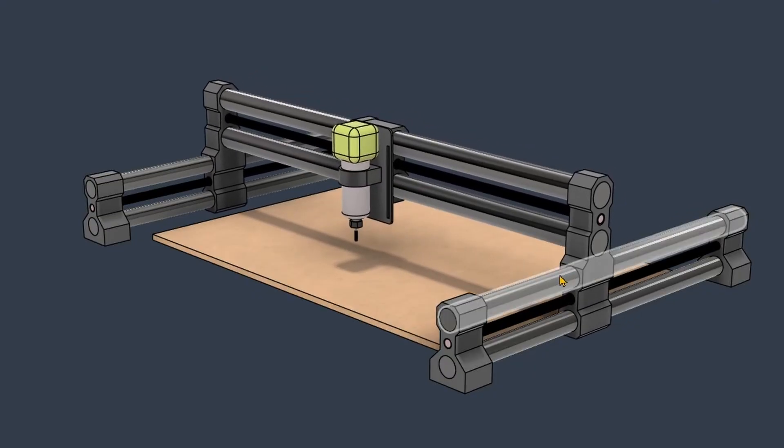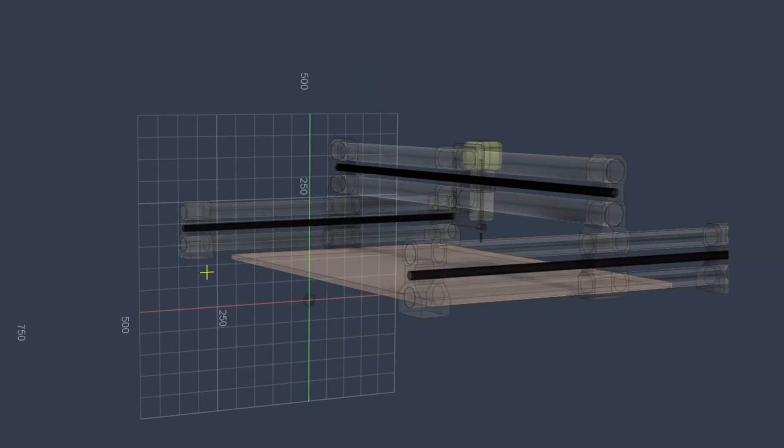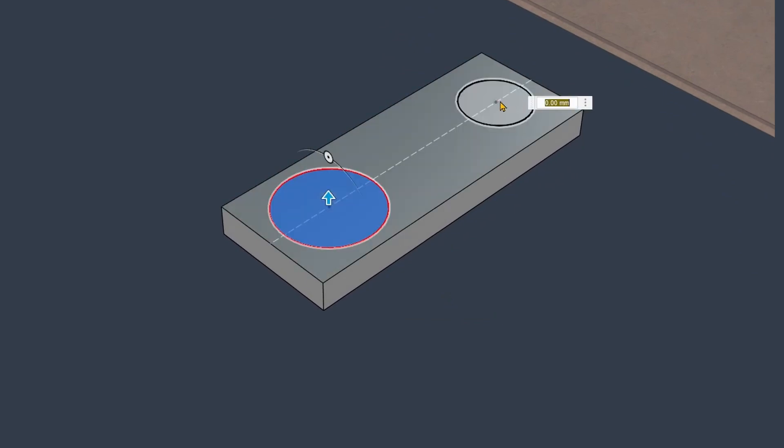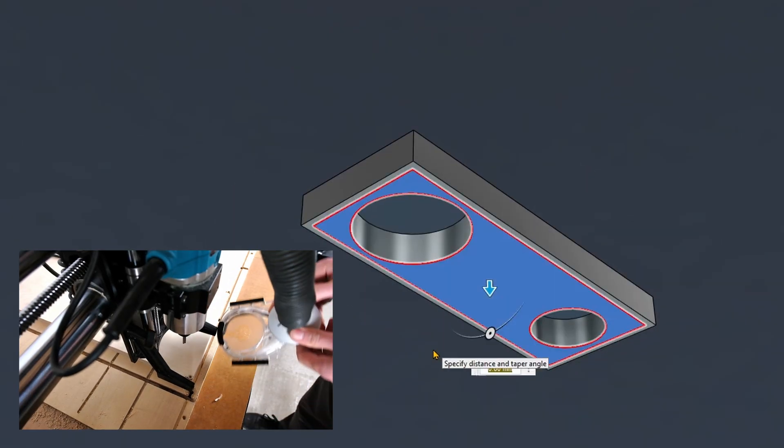The first challenge is to come up with a dust shoe design and figure out the proper placement for the collection tube. The original Onefinity dust shoe had a collection tube located in front of the spindle, which is quite handy solution.